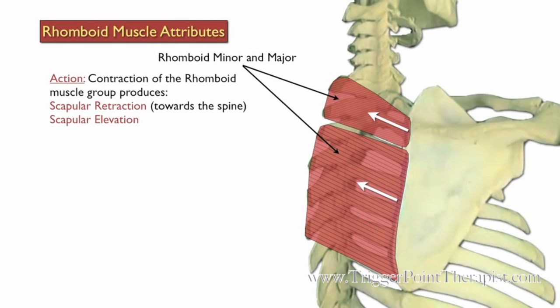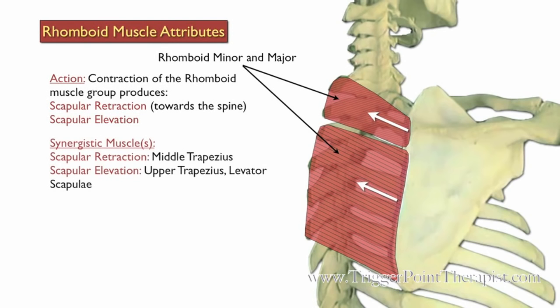Contraction of the rhomboid muscle group produces scapular retraction and scapular elevation. The middle trapezius is synergistic to the rhomboid muscles during scapular retraction. The upper trapezius and levator scapula are synergistic to the rhomboids during scapular elevation.